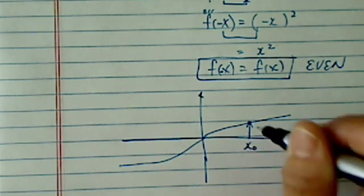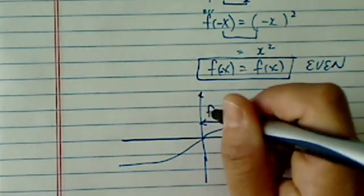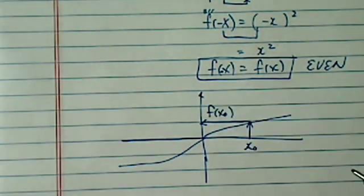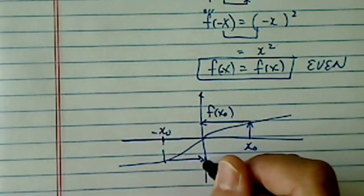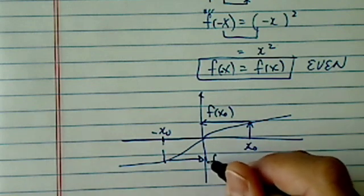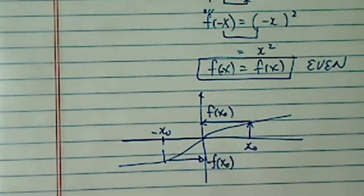If I take x0 over here, this is my f of x0. It's a positive. Now, the twin is over here, minus x0, back in over here. And you know what? It turned out to be a minus f of x0.